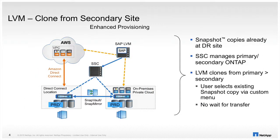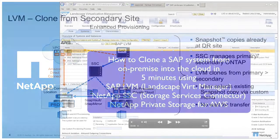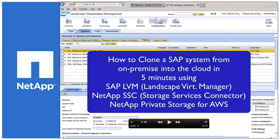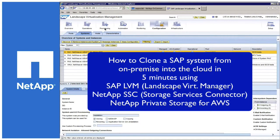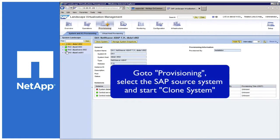In this use case, we want to demonstrate how SAP LVM can be used to fully automate cloning an SAP system from on-premise into the cloud. In the scenario shown here, the co-location is used as a disaster recovery site and all backups utilizing NetApp snapshots are constantly replicated into the cloud to be available in case of a disaster. Customers could now use these snapshots to clone or copy a system using on-demand cloud resources directly from within SAP LVM. Now let's see how SAP LVM can clone a system from on-premise into the cloud in just five minutes.